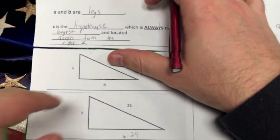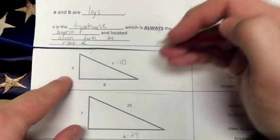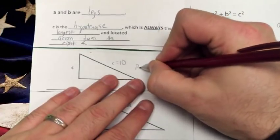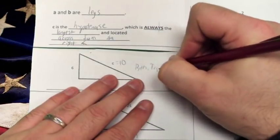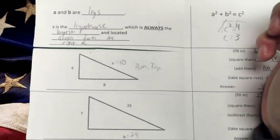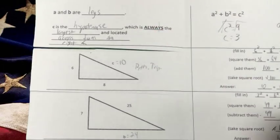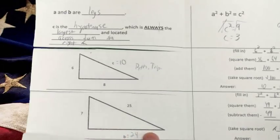I would, honestly, you could just write this, C equals 10, and you could just write Pythagorean triple as your word justification, because then I would know, hey, he knew his Pythagorean triple, she knew his Pythagorean triple, so we're good to go.